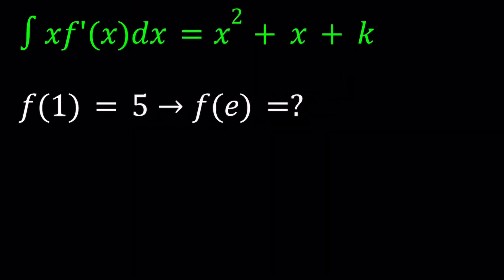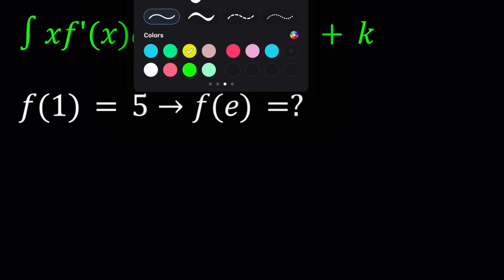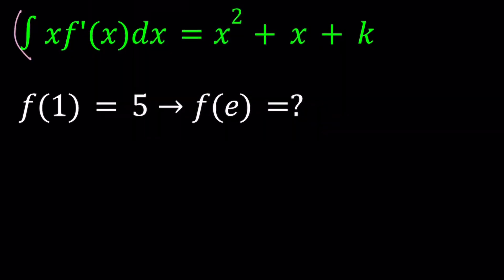If you differentiate both sides, like this and like that, you're going to get the following. First of all, these two are going to cancel out. And then we're going to end up with x times f prime of x. Of course, the x is also going to magically disappear.